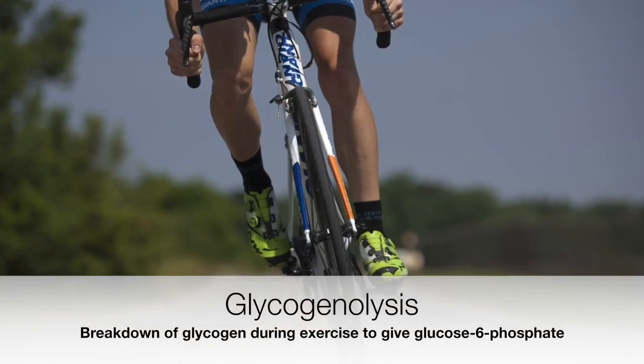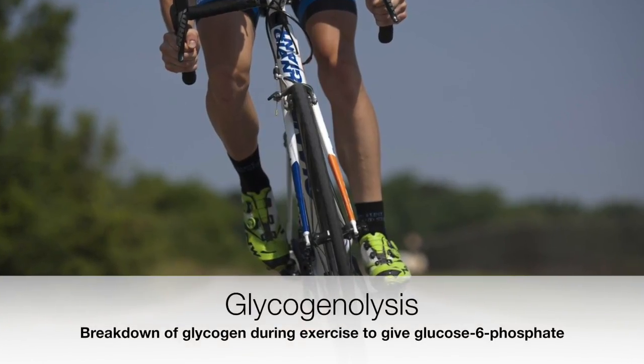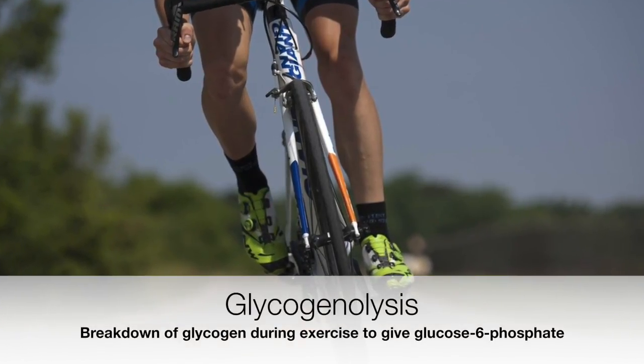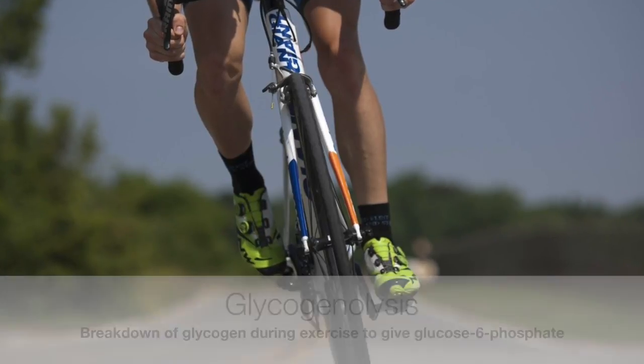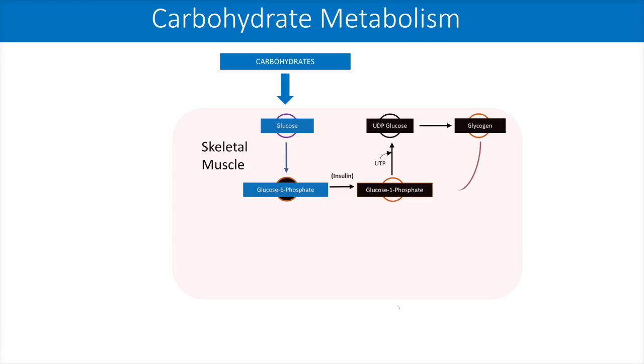Glycogenolysis — the breakdown of glycogen during exercise to give glucose 6-phosphate, typically in the presence of epinephrine and glucagon.